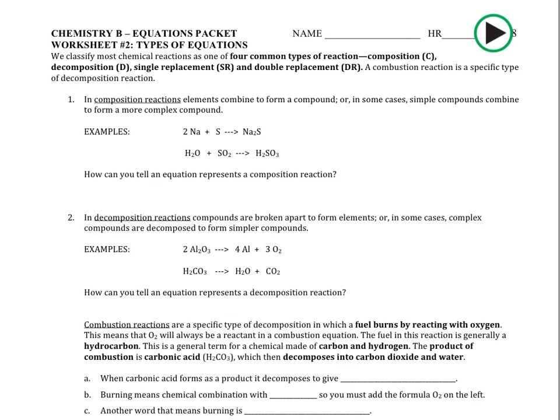This is worksheet two of the equations packet, and this is where we are going to learn how to classify reactions. We learned that all reactions have reactants on the left of the arrow and products on the right, but pretty much all chemical reactions can be categorized into one of four common types: composition, decomposition, single replacement, and double replacement. We'll also talk about a specific type called a combustion reaction.